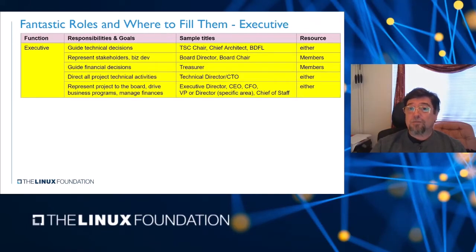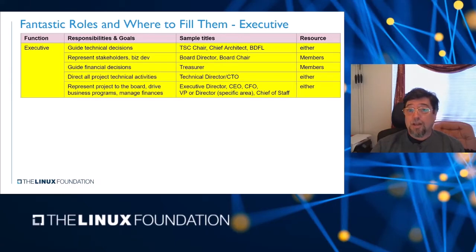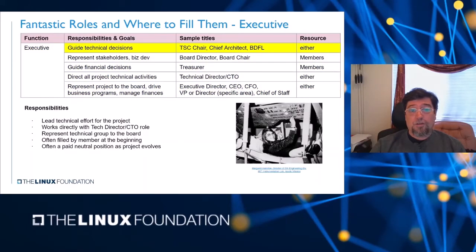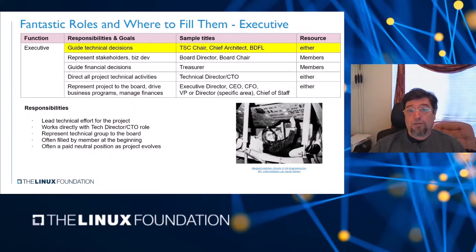Starting with the executive roles — these are leadership roles primarily filled by member representatives, because members are the primary stakeholders in projects and this is the table where they get a seat. The exceptions are for roles that need to be filled by a neutral person. First, the TSC chair, chief architect, benevolent dictator for life — there are a number of names for this role. This is the technical leader of the project: the person who has the final say in everything about the project from a technical standpoint. This role goes by many names with slight nuances.